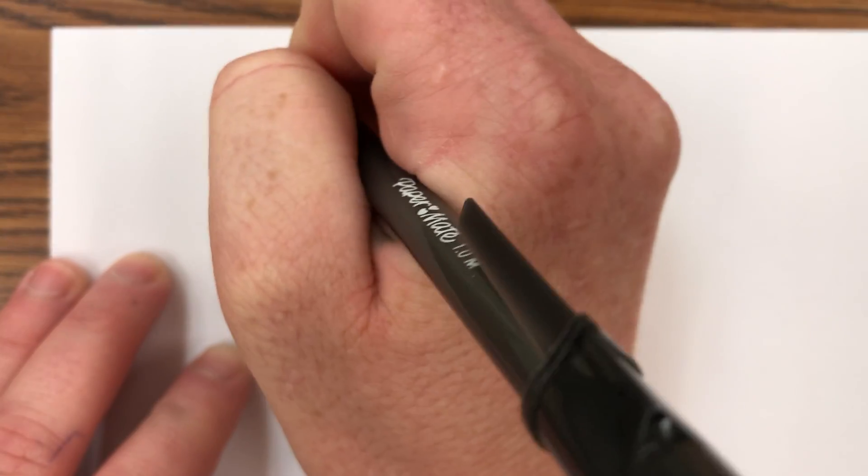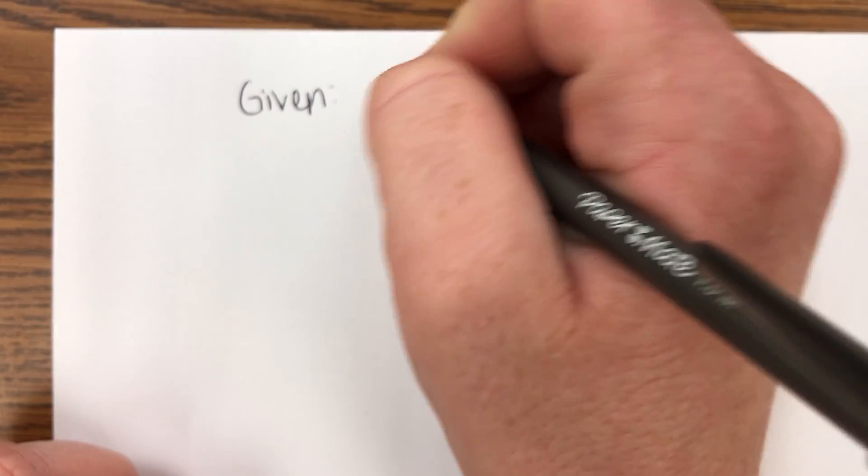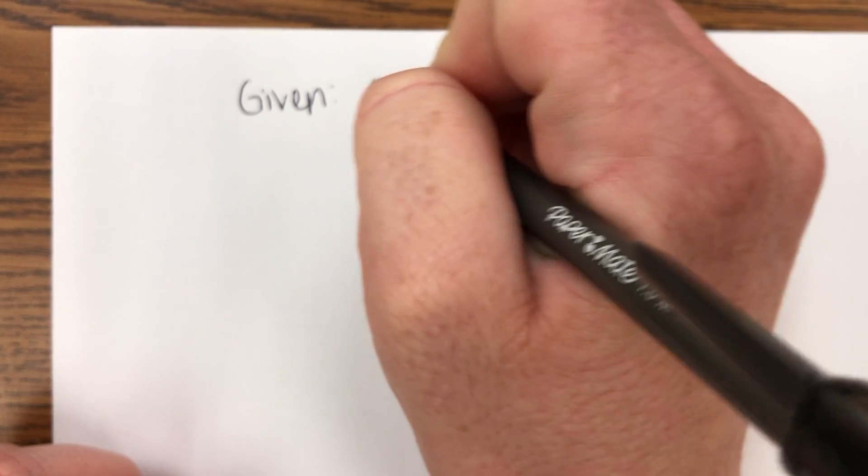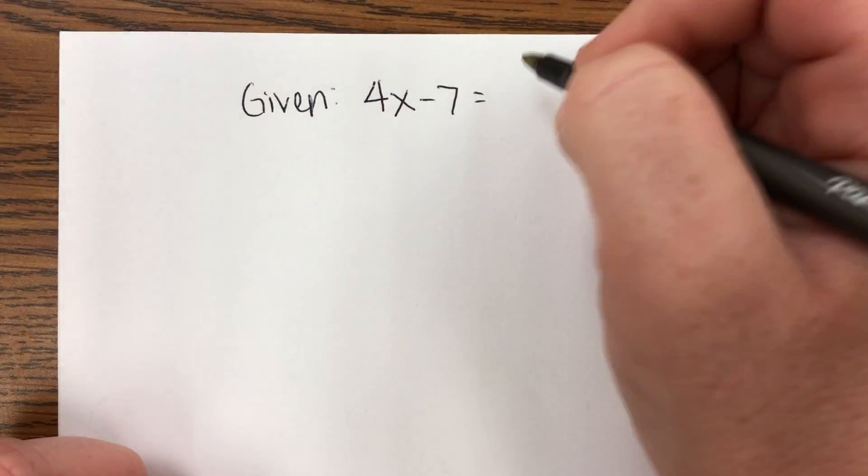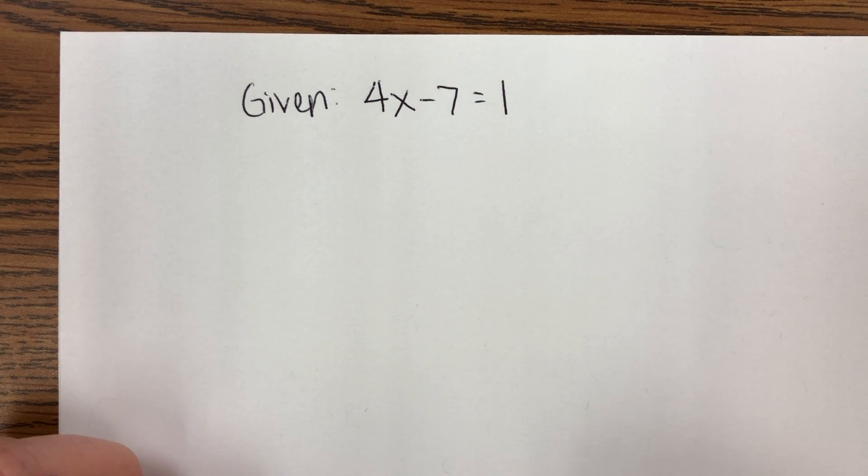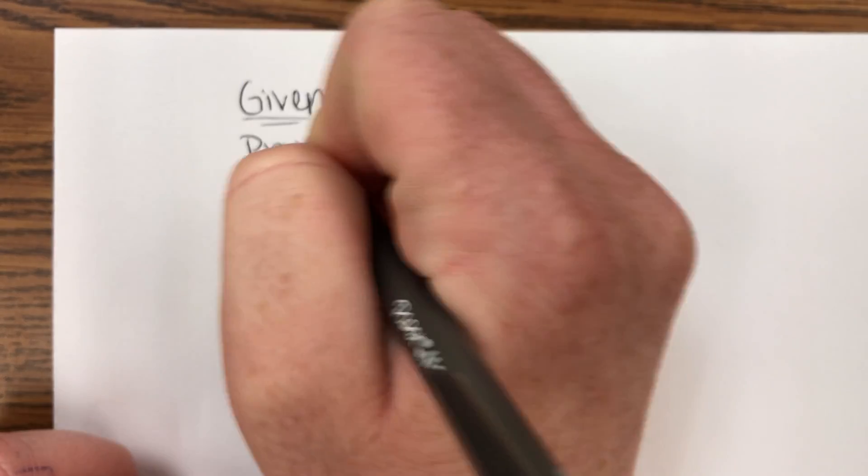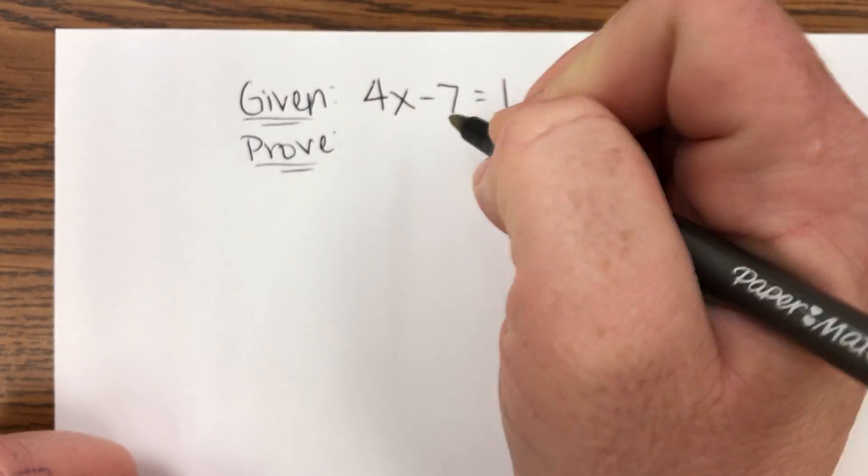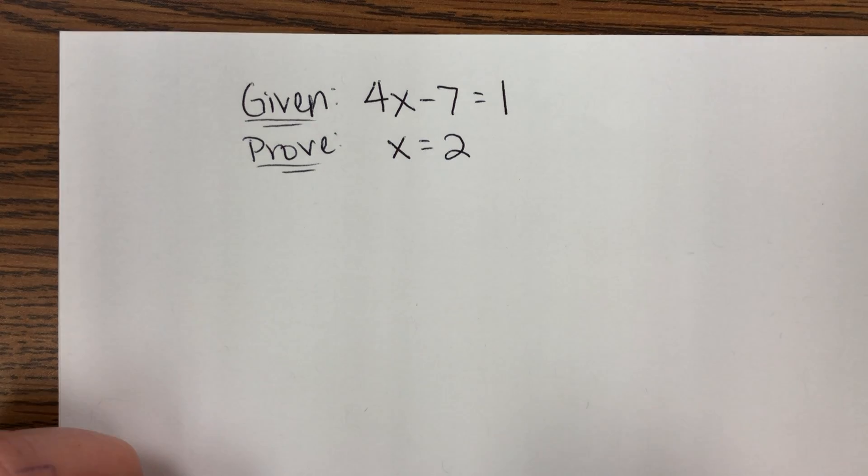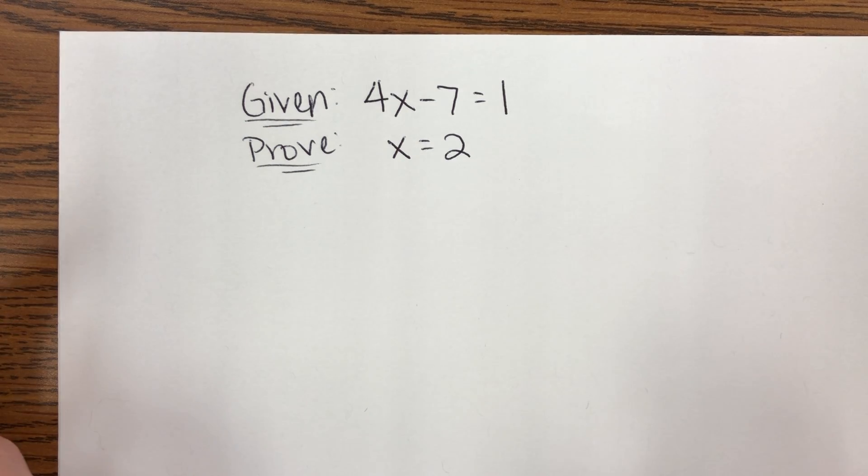Proofs. All right. When we set up a proof, a proof is just kind of a logical thought progression on how we get from one fact in math to another fact. Okay. So we always start with a given. We'll always be given some true statement. It is a fact. So let's say that we're given 4x minus 7 equals 1. Let's say that's our given fact. And based on that fact, we have to prove something else. So in this case, we're going to have to prove that x equals 2. Okay. So that's what we have to do. Seems easy enough, right? This is an algebraic proof.